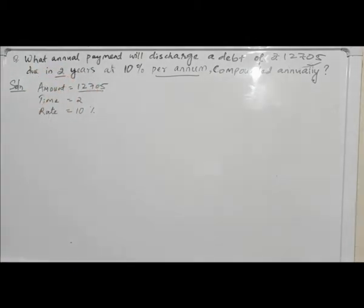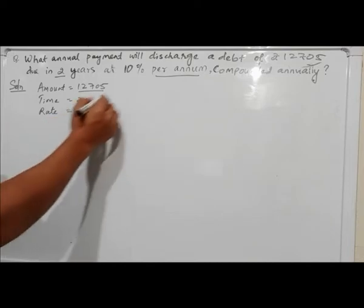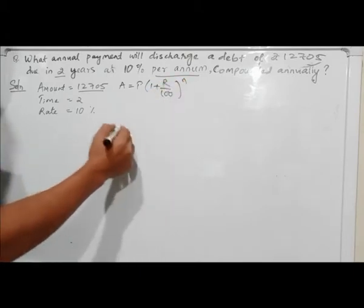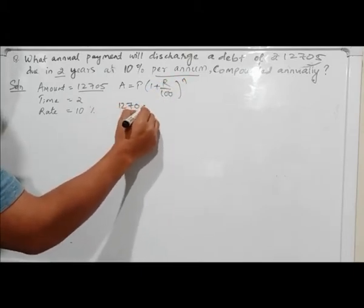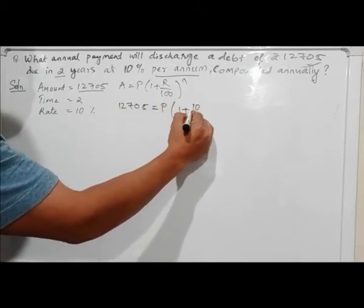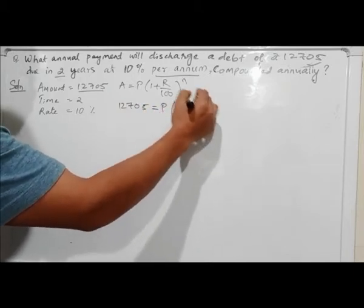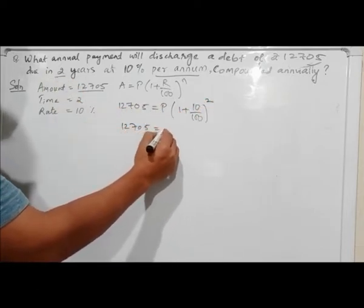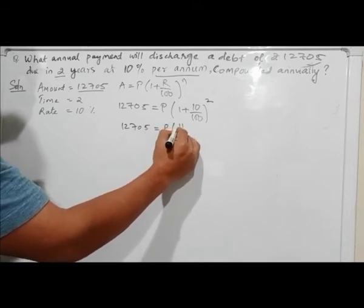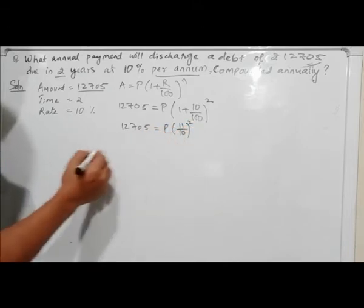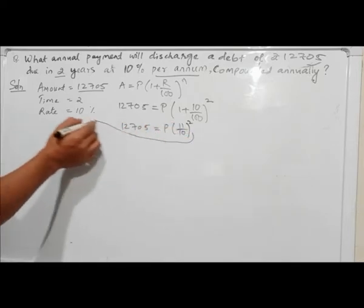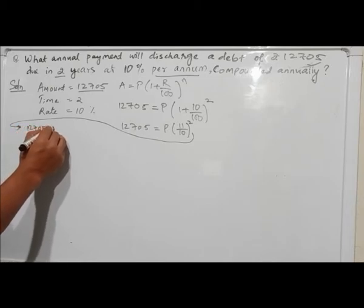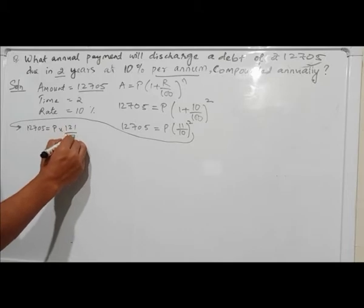This is the principle of the amount: order of 1 plus R by 100 to the power n. So with 1 plus R by 100, for 2 years, this gives us 1 plus R to the power 10 squared. The principle of the amount is 12705, equal to P times 121 by 100.